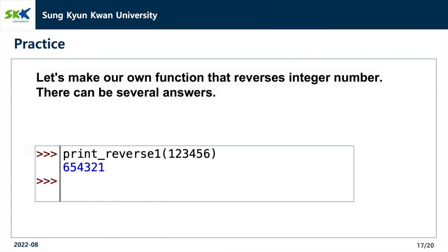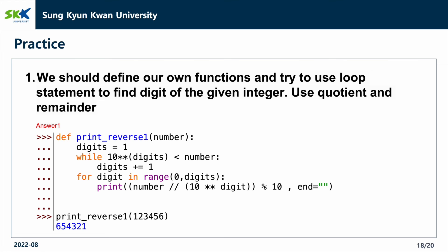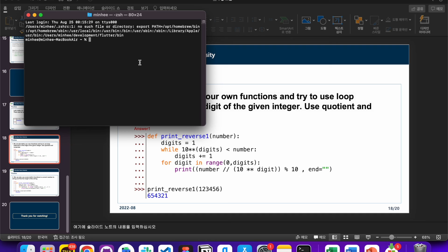Lastly, let's solve a practical problem. Let's make our own function that reverses an integer number. There can be several answers. We should define our own functions and try to use a loop statement to find each digit of the given integer using quotient and remainder. Name the function we want and get the number as a parameter.